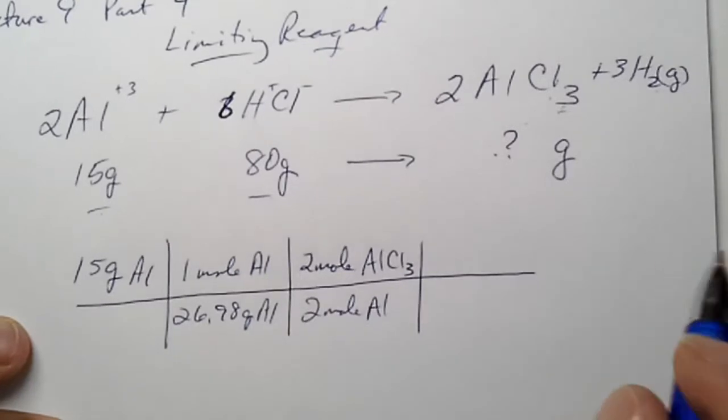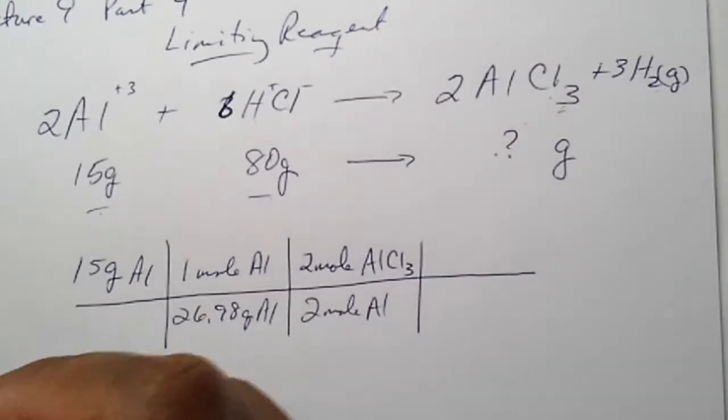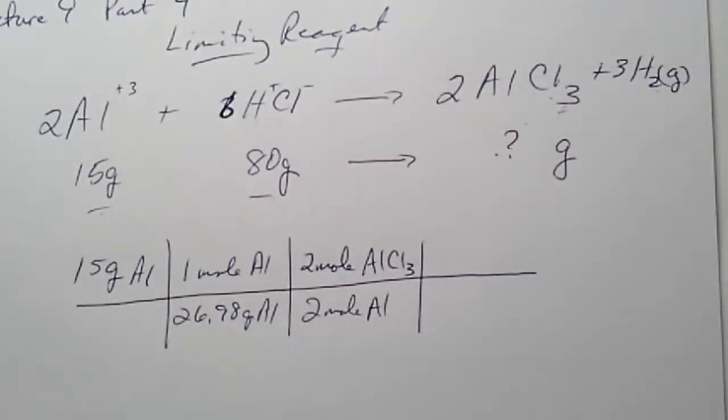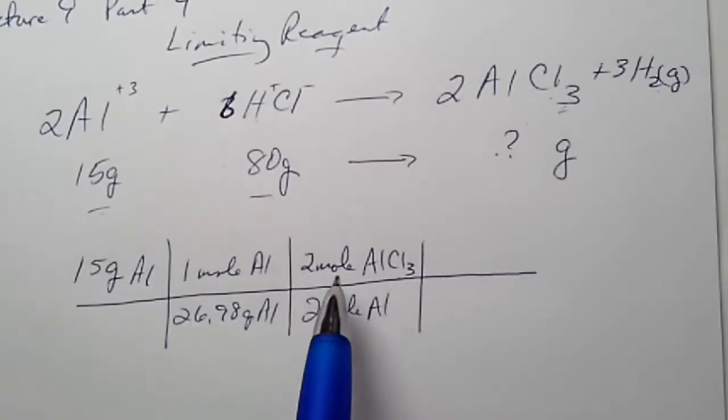And now I need aluminum chloride. So, that's three times thirty-five. I believe is... That's thirty-five point four-five times three. That's one hundred and six point three-five for the chloride.